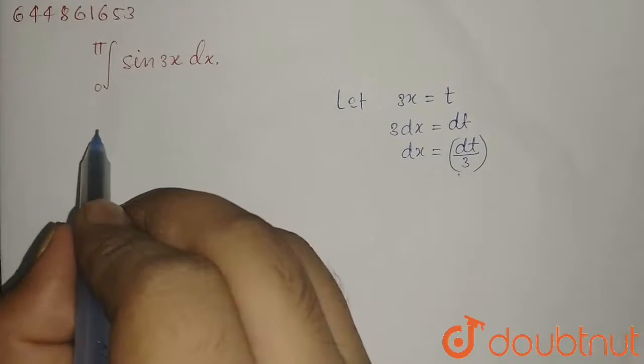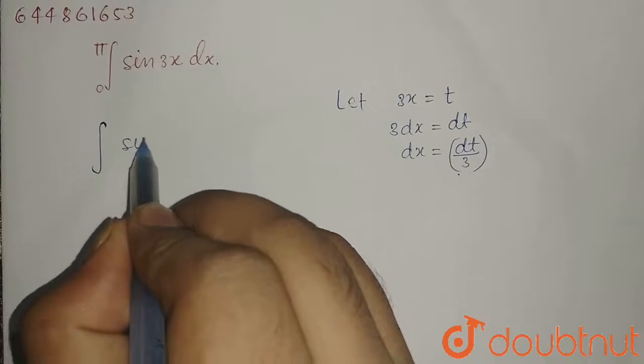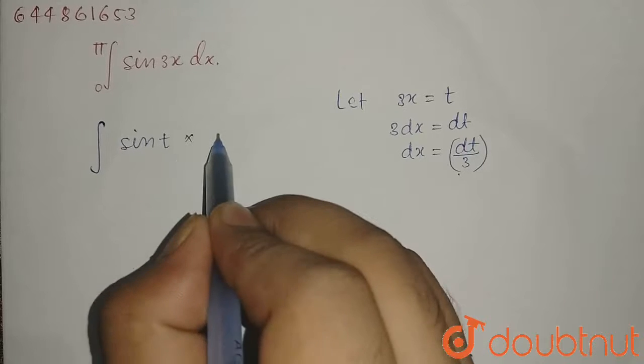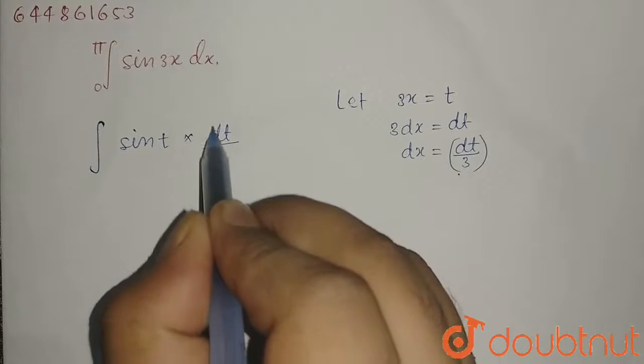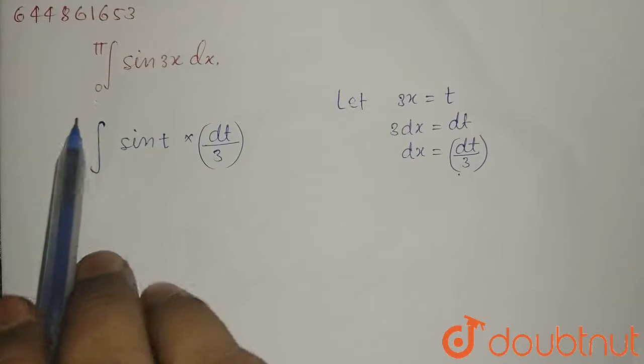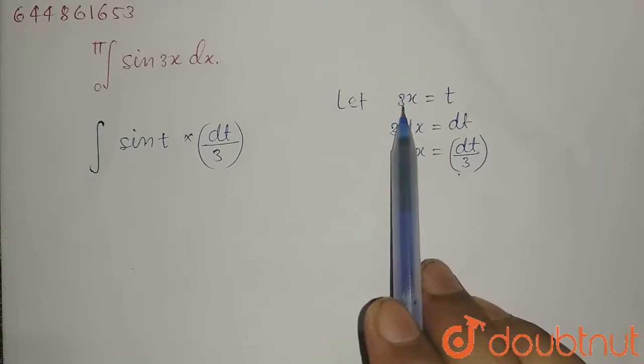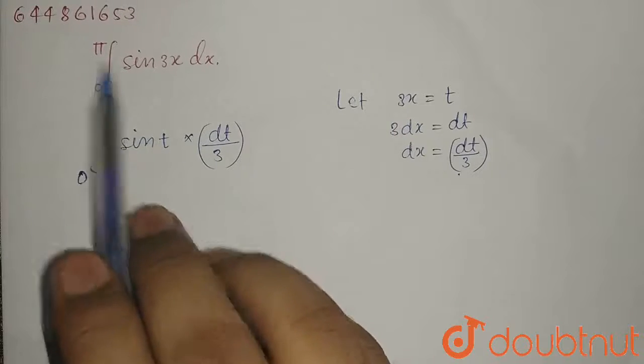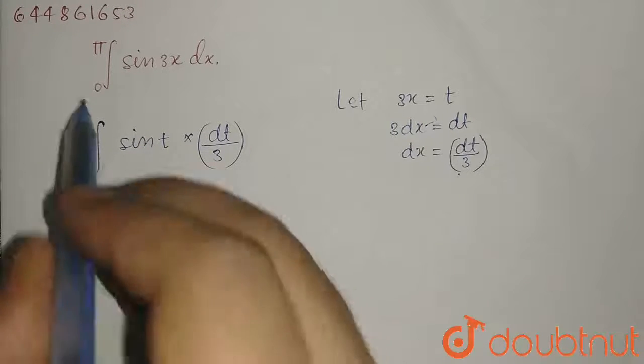So we can write this as the integral of sin t times dt over 3. The lower limit: at x equals 0, t equals 0, and at x equals pi, t equals 3pi.